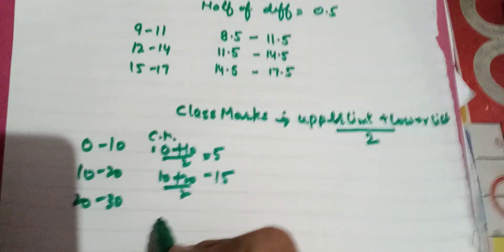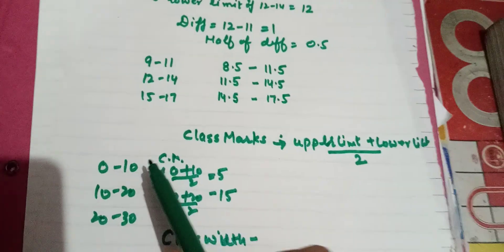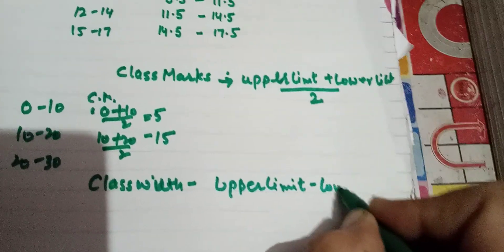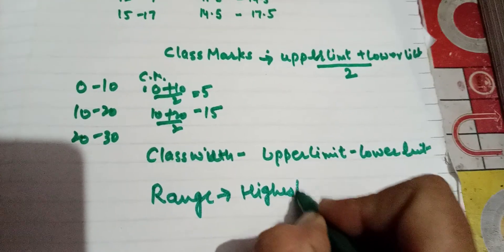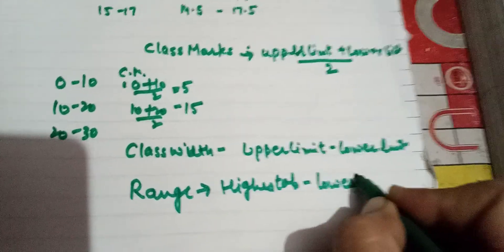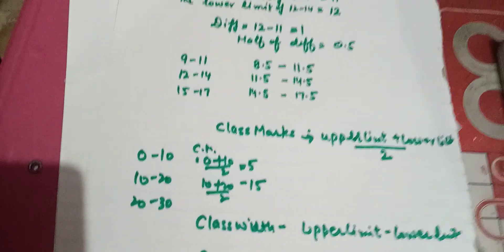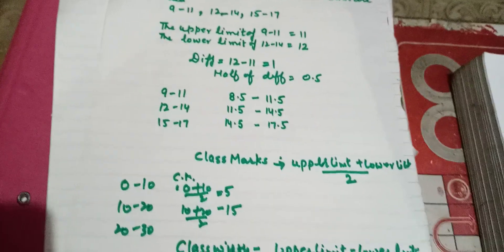Next we have class width, which means the difference between the upper limit and the lower limit: upper limit minus lower limit. And the next thing is range — that is the highest observation of the data minus the lowest observation of the data. So children, these were a few basics related to this chapter, and we will be doing frequency distribution tables in our next class. Please do this work in your maths register. Thank you, have a nice day.